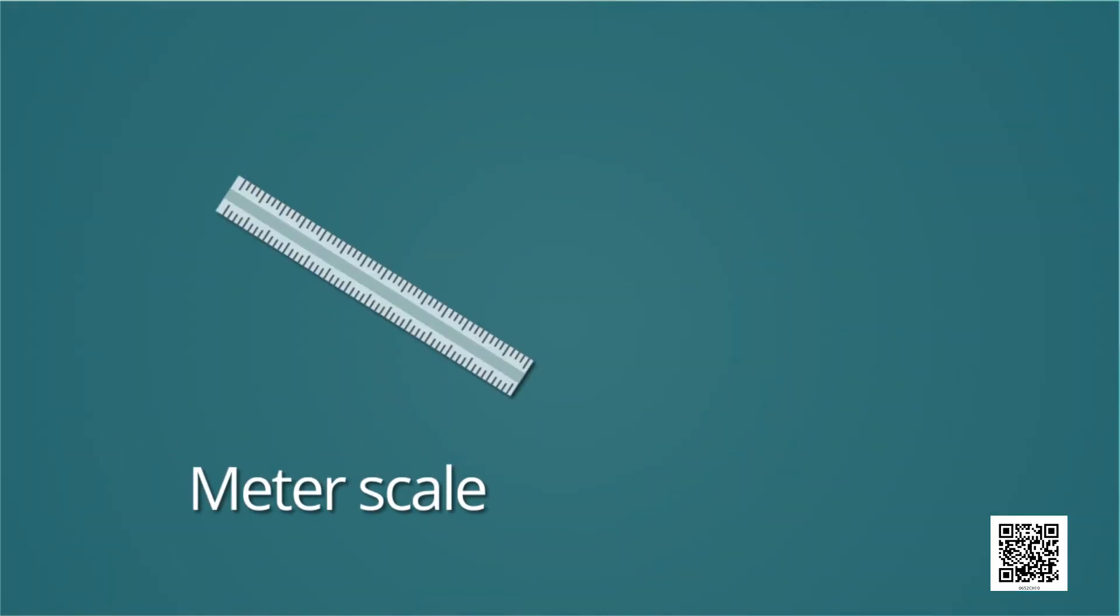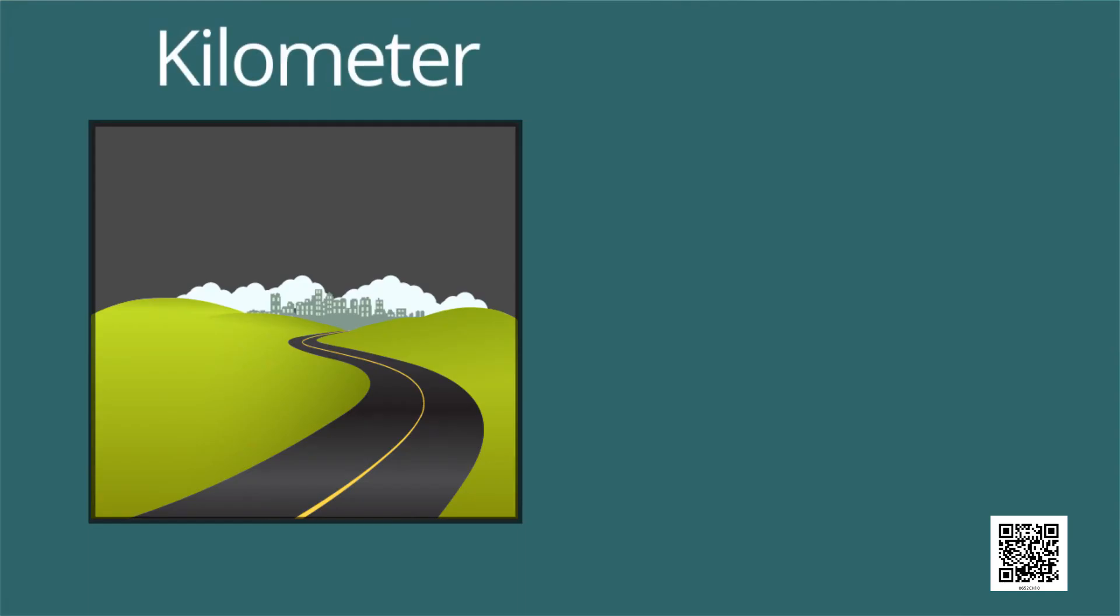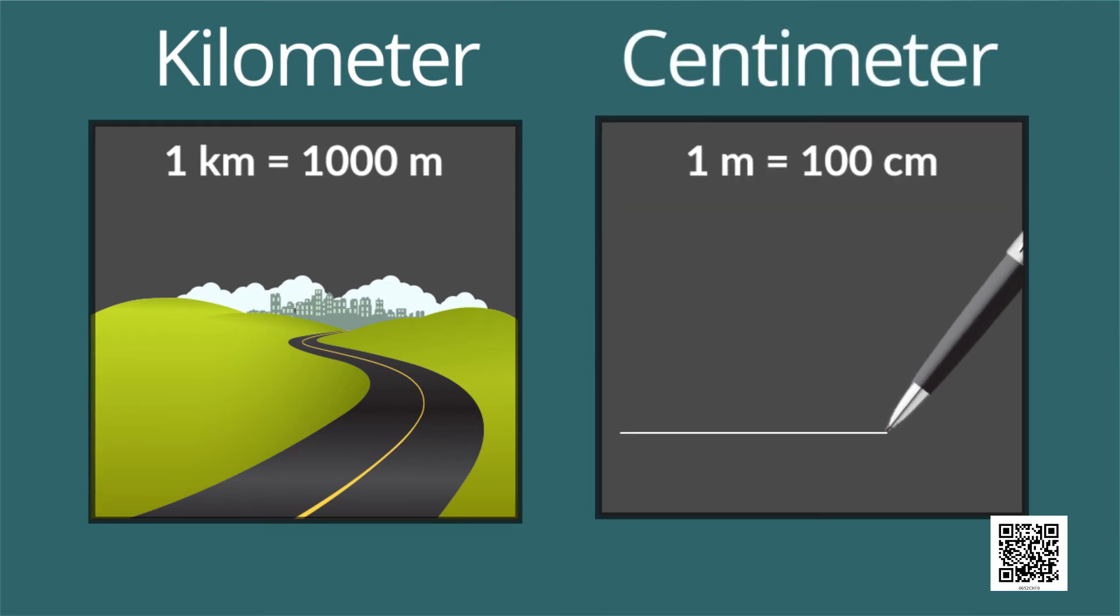Length can be measured with the help of a meter scale or a measuring rod. The unit of length is meter. For measuring large distances, a larger unit of length, kilometer, is used. 1 kilometer is equal to 1000 meter. For smaller distances, a smaller unit called centimeter can be used. 1 meter is equal to 100 centimeter. So we do need to know the correct way of measuring lengths and distances.